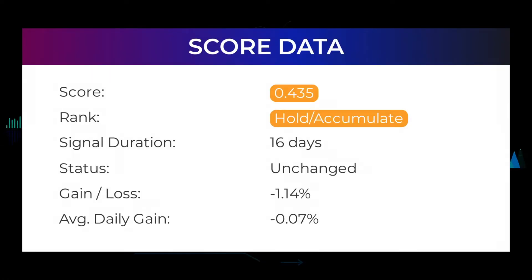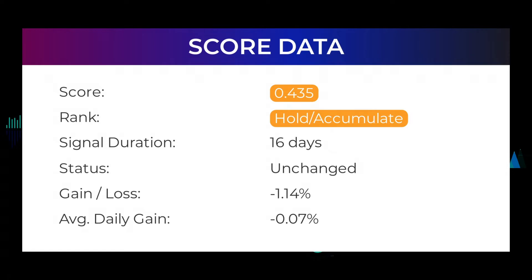In this section you will get some information about the current Microsoft performance to better understand where the stock is right now. In our systems, the Microsoft stock currently holds a 0.435 score, and our system has ranked Microsoft as a buy or hold candidate since March 18, 2022. In this period the stock has not performed as our systems expected and actually had a loss of minus 1.14%, an average return of minus 0.07% per day since first recommended.